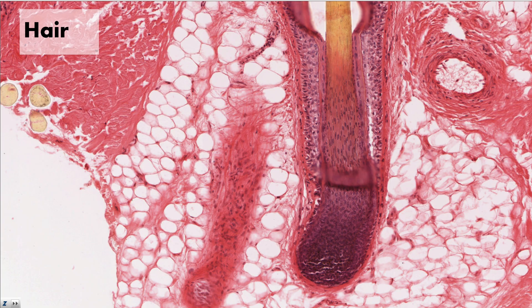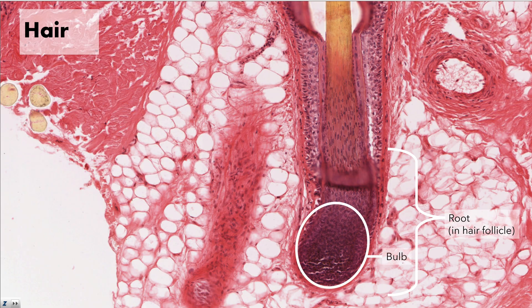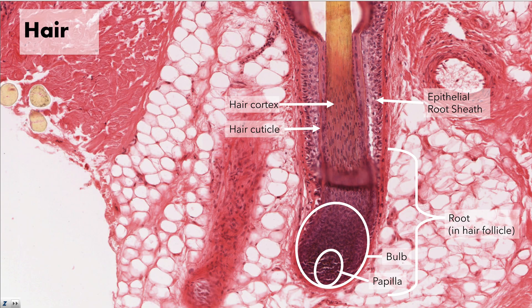Human hairs extend from deep inside the reticular layer of the dermis to outside the integument. This image focuses on one hair follicle, the deepest portion of the hair. The root of the hair originates in the hair follicle. The end of the hair forms a widened bulb that contains a hair papilla. The papilla contains stem cells and a capillary network to deliver nutrients. As hair cells grow out of the bulb, they form layers. The cell nuclei form the hair's cortex, and surrounding the cortex is the hair's cuticle. The hair is in a shaft composed of a root sheath made of two layers: the epithelial root sheath, which is a non-keratinized stratified squamous epithelium, and the connective tissue root sheath, composed of dense irregular connective tissue to hold everything together.